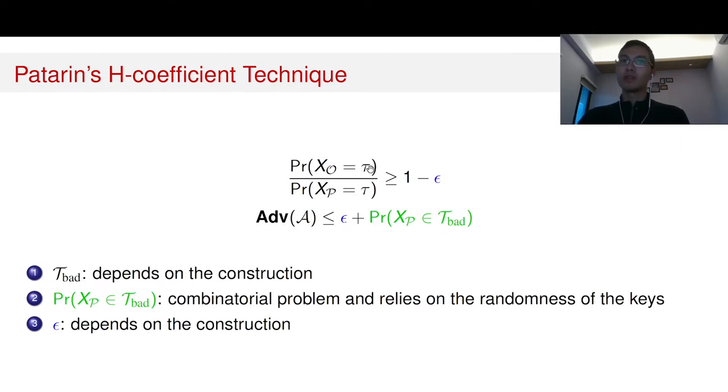So we can see that the second step, the green probability of the bad transcripts in the ideal world, is actually a totally combinatorial problem and only relies on the randomness of the used keys, while the first and the last steps actually totally depend on the construction itself. We see that the constructions in the previous slides all look very similar.